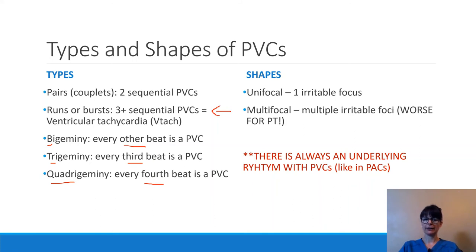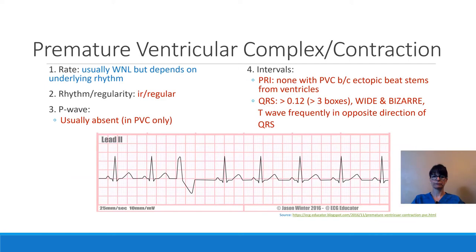Keep in mind — this is very important — there is always an underlying rhythm with premature ventricular contractions, just like with premature atrial contractions. That underlying rhythm can be any rhythm. When analyzing the EKG, we look at rate, rhythm, P-wave, and the intervals.